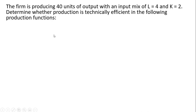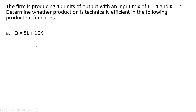To examine those ideas, we're going to have a firm that is producing 40 units of output using an input mix of L equals 4 and K equals 2. L is units of labor, K is units of capital. We want to determine whether production is technically efficient in the following scenarios.